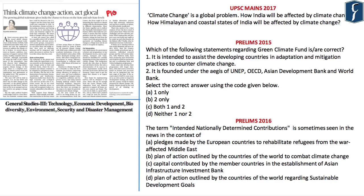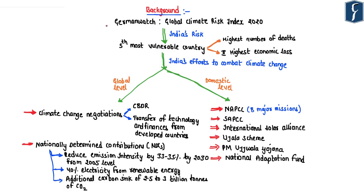The next article appears on page 10, titled 'Think Climate Change Action at Glocal.' This article is important mainly for GS Paper 3, Environment. Previous year Mains and Prelims questions have been asked on climate change — for example, in UPSC Mains 2017: 'Climate change is a global problem. How will India be affected, and how will Himalayan and coastal states be affected?' In Prelims 2015, there was a question on the Green Climate Fund, and in Prelims 2016, a question on Intended Nationally Determined Contributions.